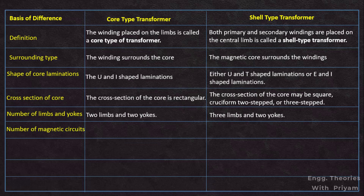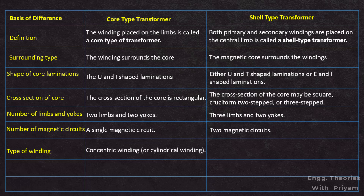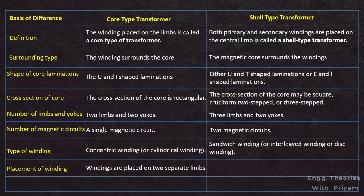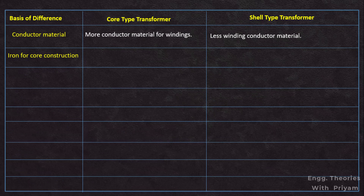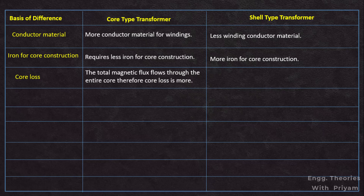A core type transformer has a single magnetic circuit, while a shell type transformer has two magnetic circuits. The winding type used in core type transformers is concentric or cylindrical winding, but in shell type transformers it is sandwich, interleaved, or disc-type winding. Windings are placed on two separate limbs in the core type transformer, while in the shell type, primary and secondary windings are placed on the central limb. The core type transformer requires more conductor material for windings, whereas the shell type requires less. The core type requires less iron for construction, while the shell type requires more iron.